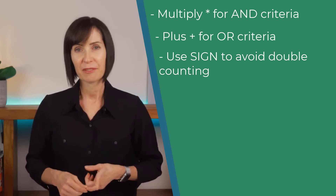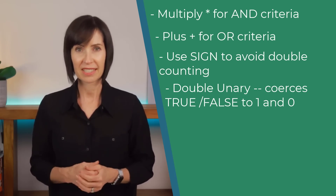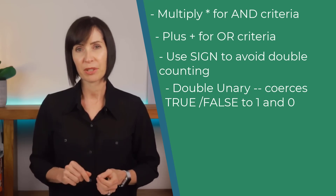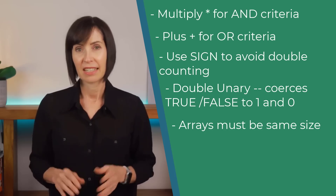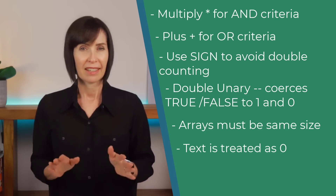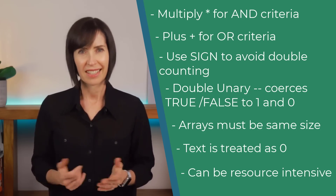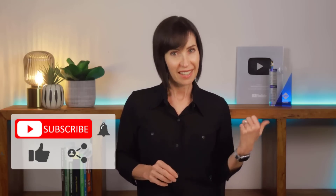If you only have one logical test, use the double unary to coerce the boolean TRUE and FALSE values to their numeric equivalents. Each array referenced in a SUMPRODUCT must always be the same size. Text values included in arrays referenced by SUMPRODUCT will be treated as zero. And SUMPRODUCT can be resource intensive, especially with large datasets, so take care. If you're finding the logical tests a bit mind-bending, an easier option and a great alternative to SUMIFS, COUNTIFS, AVERAGEIFS, etc., are database functions, which are also more flexible than the IFS series of functions — check out that video next.